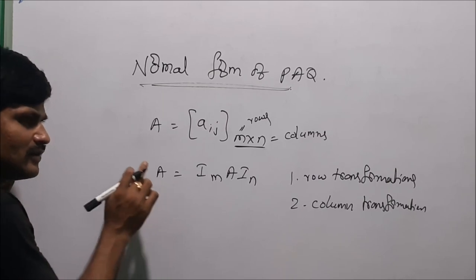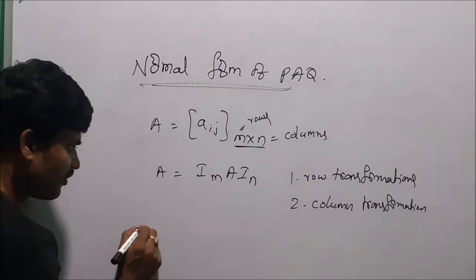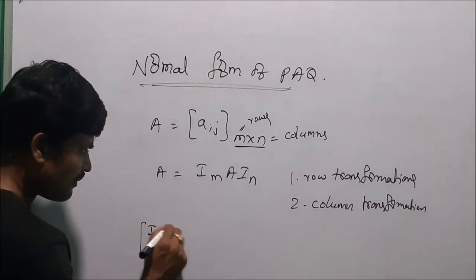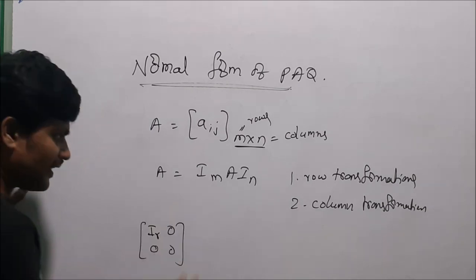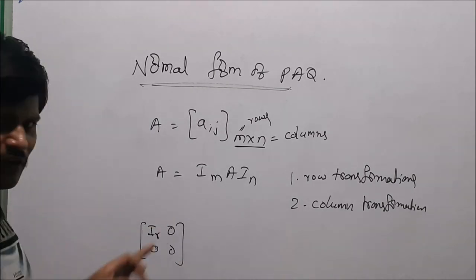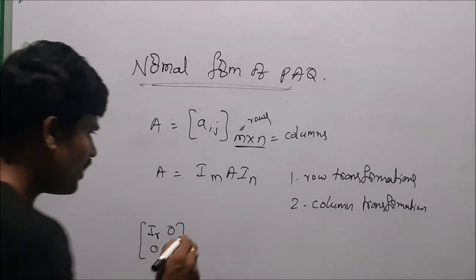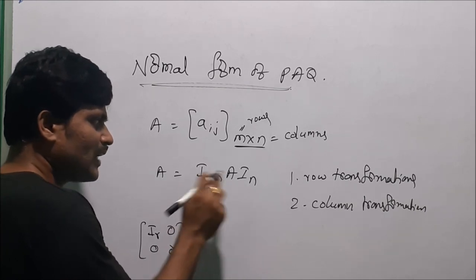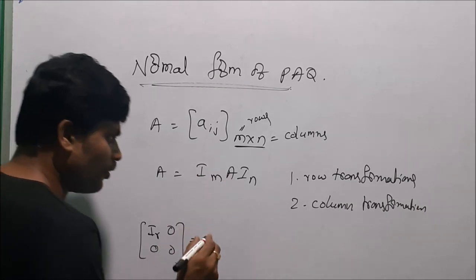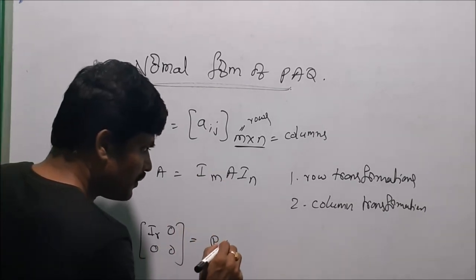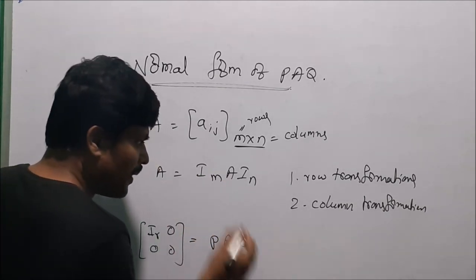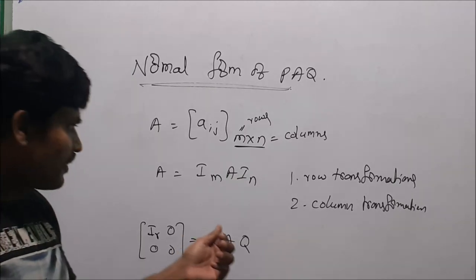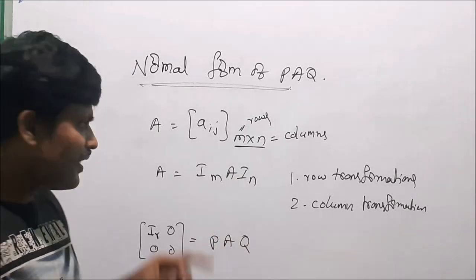By applying these two transformations, the given matrix A can be reduced to the normal form, which is of the form Ir, 0, 0, 0. At the same time, the unit matrices can be reduced to some non-singular matrices P and Q. These are two non-singular matrices.